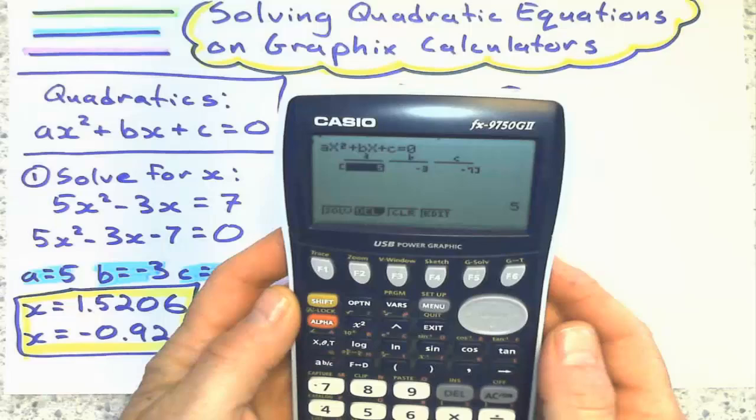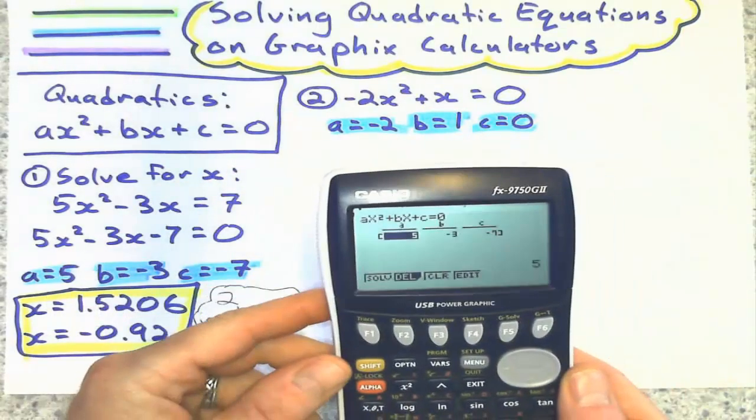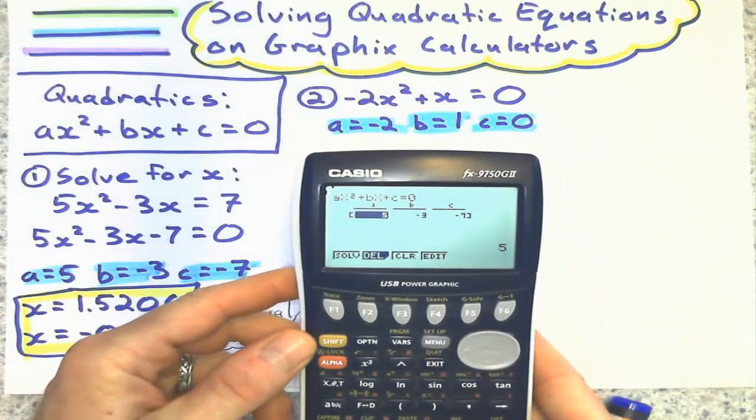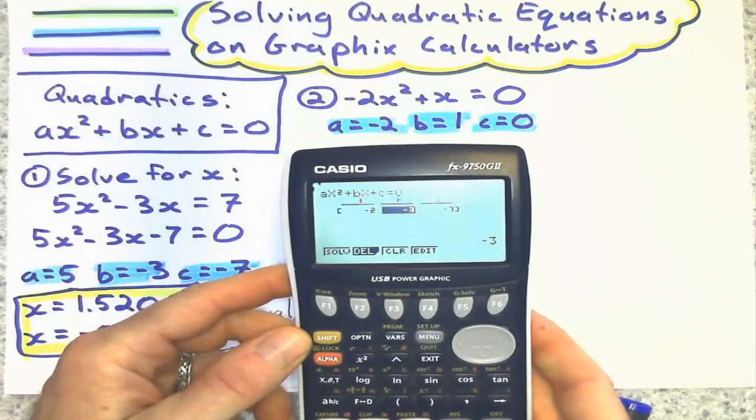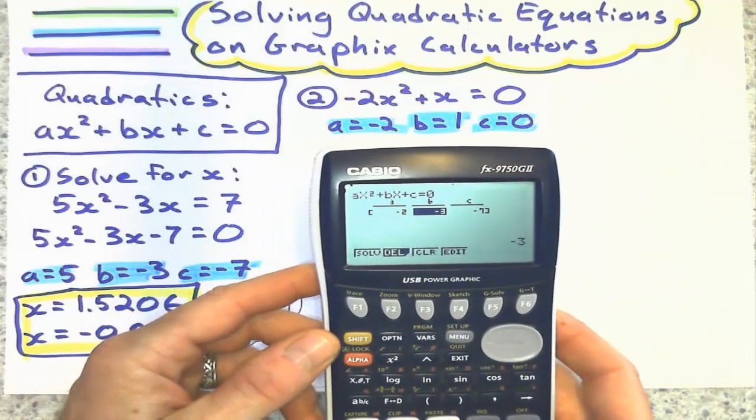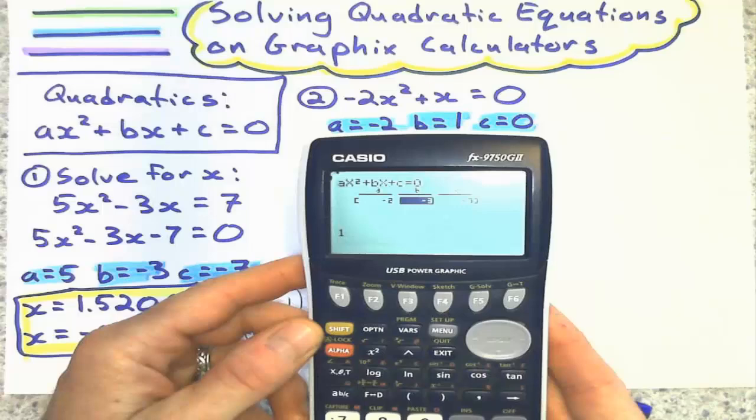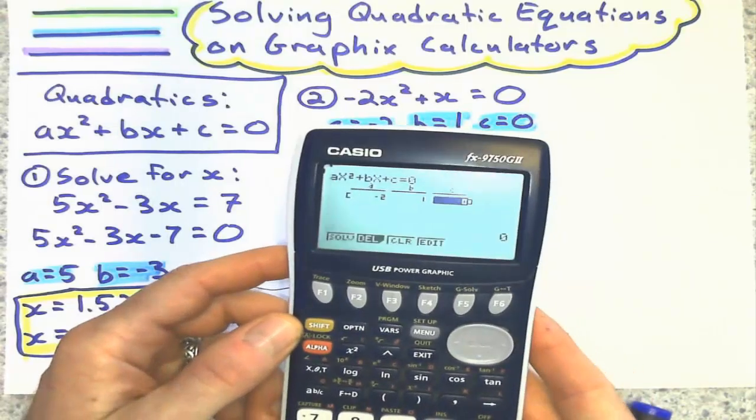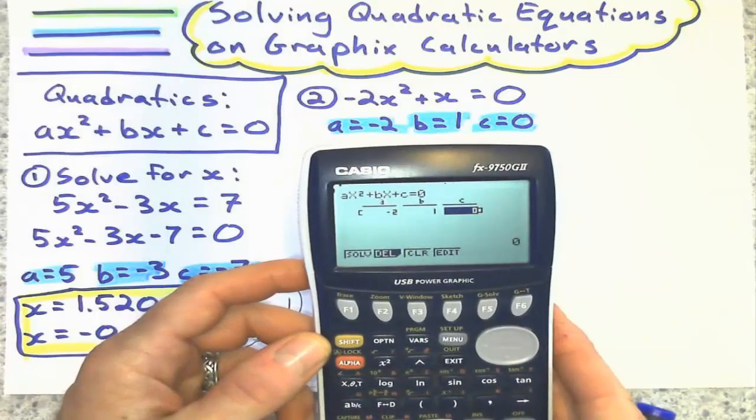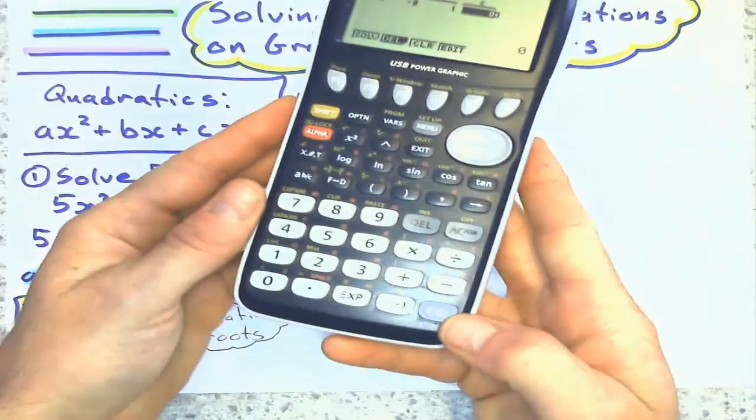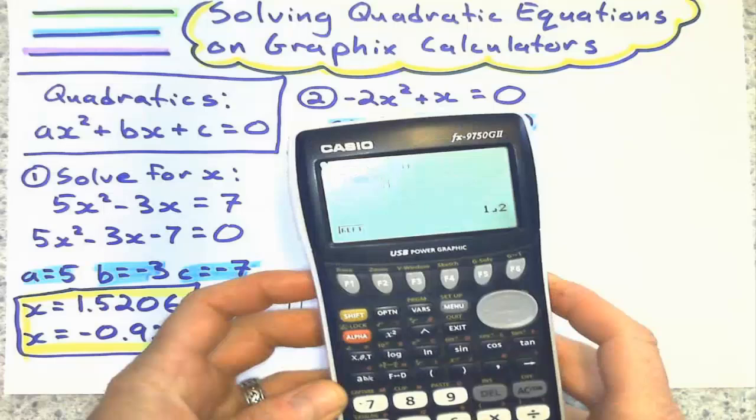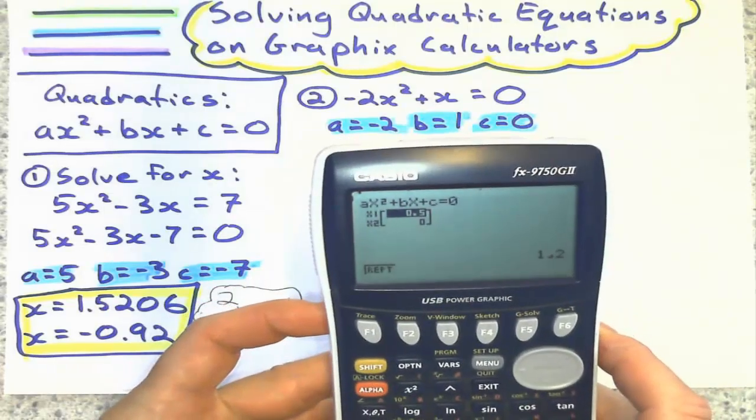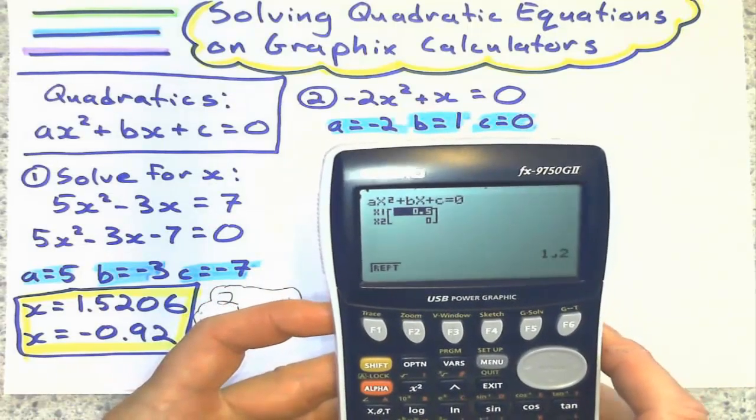So now I'd go back to my screen, press exit again, and just enter these three numbers in for A, B, and C. A gives me negative 2, execute, B is 1, execute, and C is 0. And after that, after I have all those in correctly, I think that's right, press the execute button again, and I get two nice looking roots of half and 0.